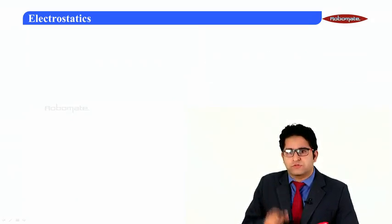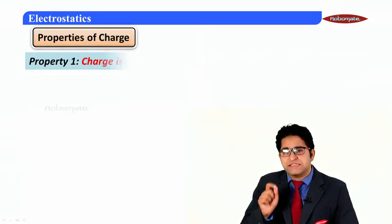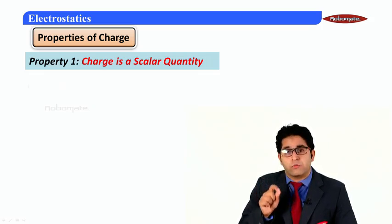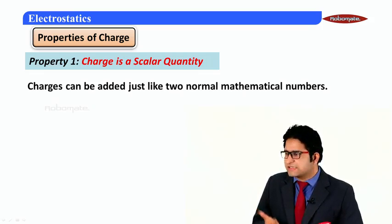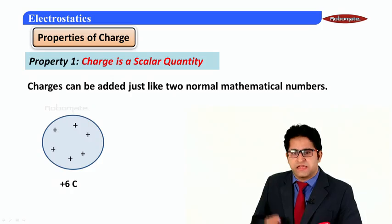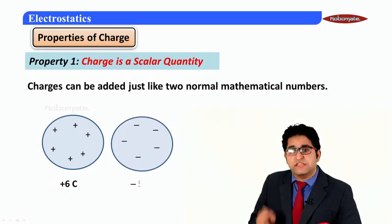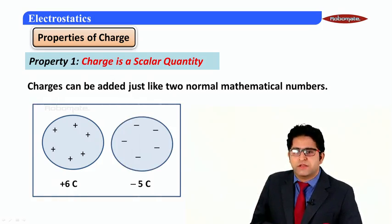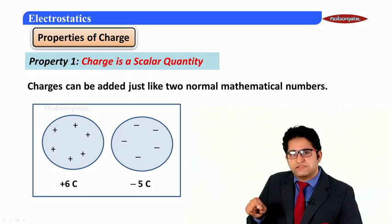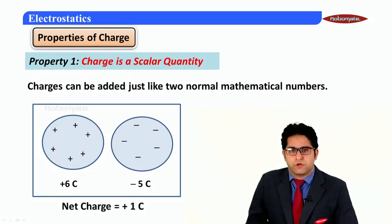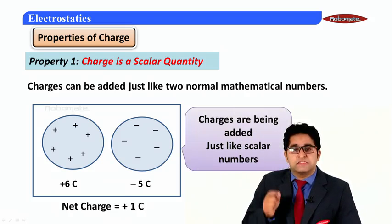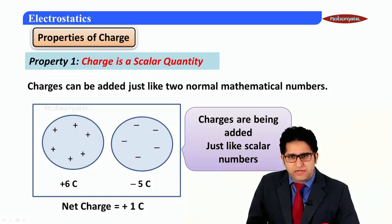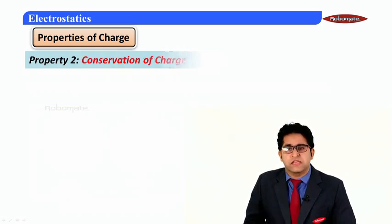Now let us revise the properties of charge. The first property is that charge is a scalar quantity — it can be added like normal mathematical numbers. For example, if the first body has charge +6 coulomb and the second has −5 coulomb, then the net charge is +6 − 5 = +1 coulomb. So charges are added just like scalar numbers.